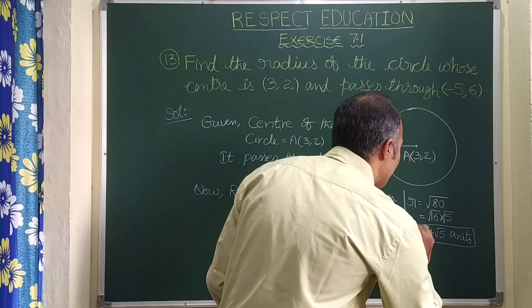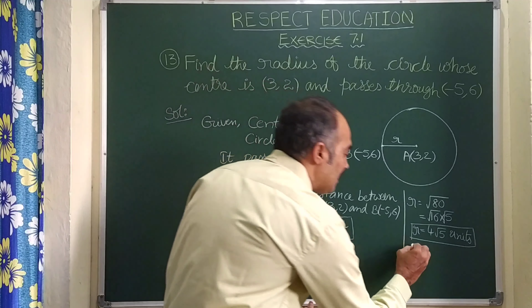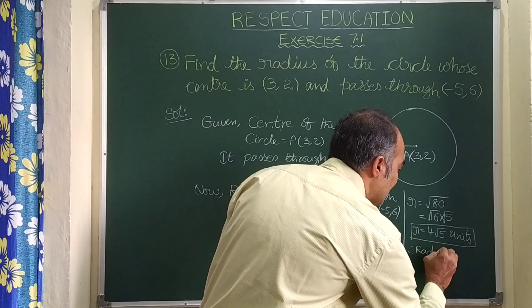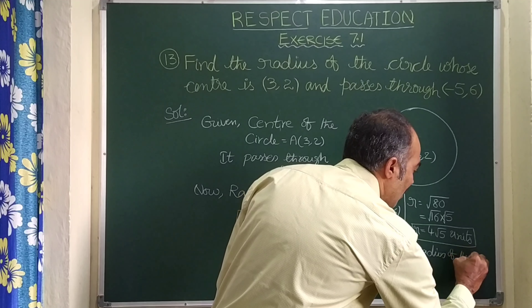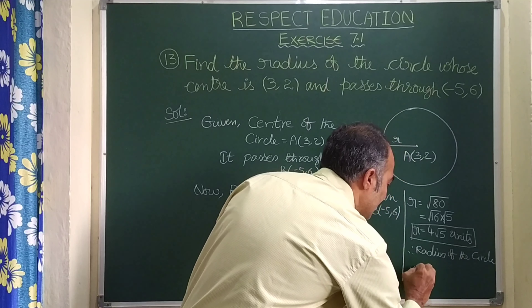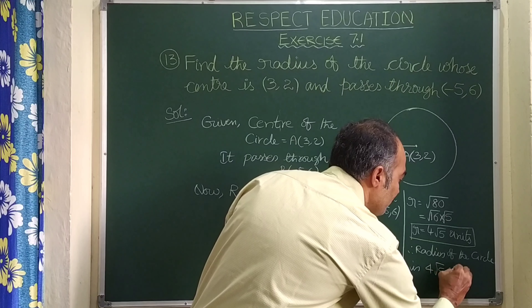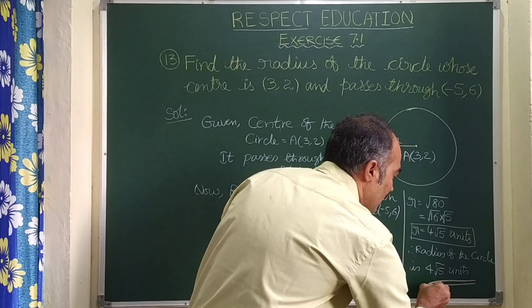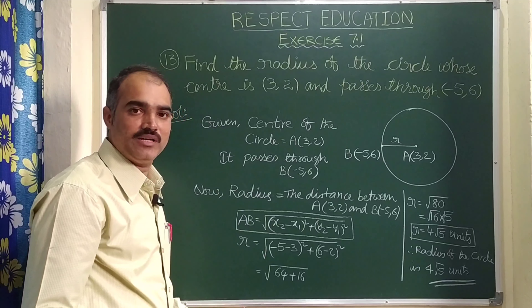Therefore, the radius of the circle is 4√5 units. This is the final answer for problem number 13.